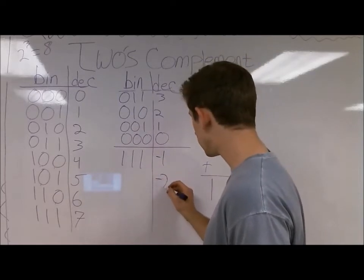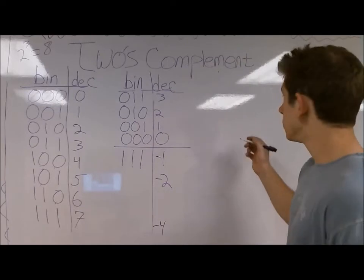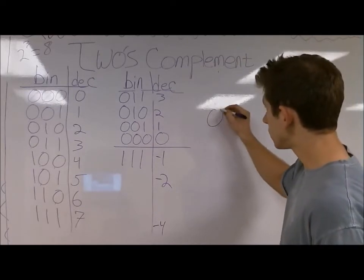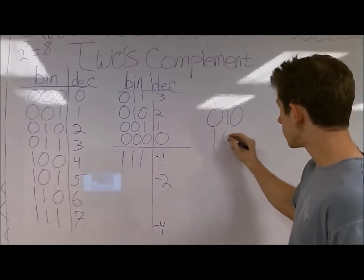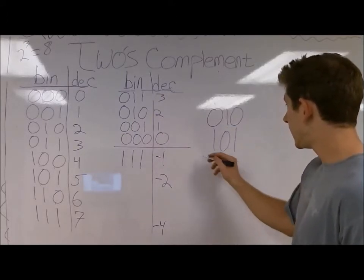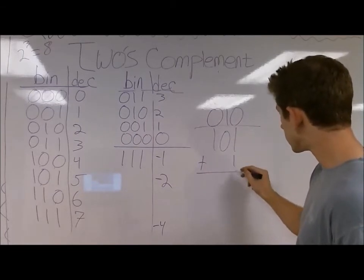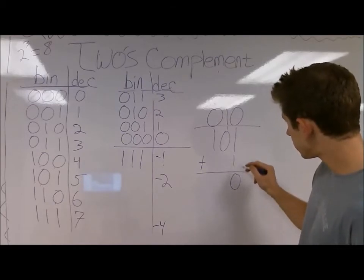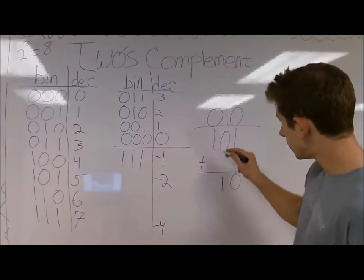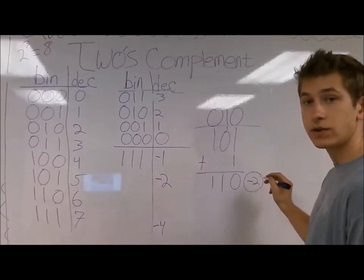What about negative 2? For negative 2, positive 2 is 0, 1, 0. As we can see here, we're going to flip the bits to 1, 0, 1, and add 1 to that value. So here's the flip, here's the 1. Adding these together: 1 and 1 is 0 carry 1, 1 and 0 is 1. This is the binary representation of negative 2.